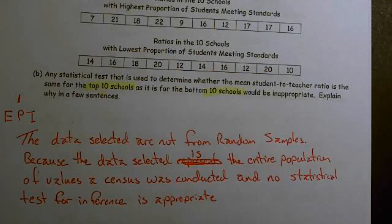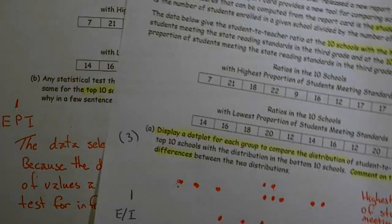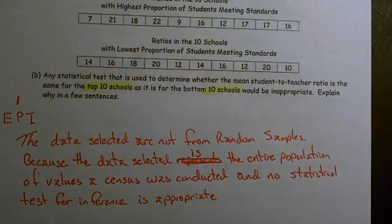For Part B, you could get essentially correct or partially correct. If you only said it was not from a random sample, that was a partial credit answer. You also needed to say that it represented the entire population, or that a census was taken — and because of that, a statistical test was not appropriate. That's how you got the full point. Three points from Part A and one point from Part B gives you four total points. Hope that helped — thanks for watching.